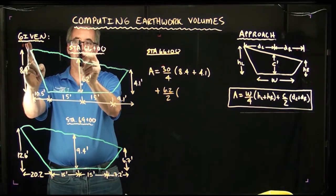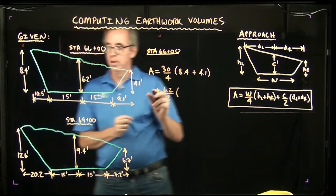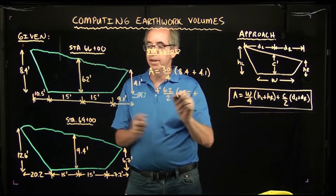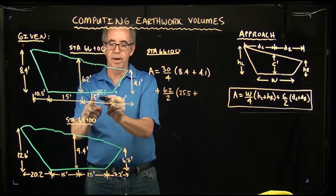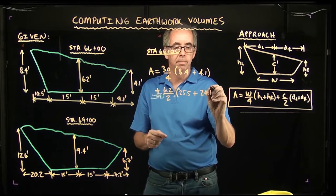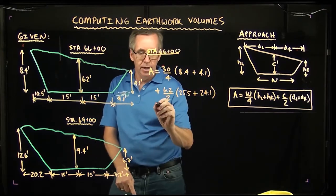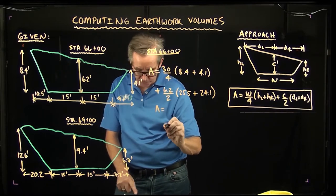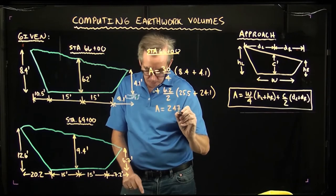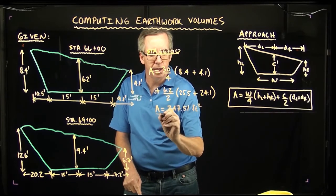this dimension up top here which would be the 15 plus the 10.5 which is 25.5 plus, and then we have the same thing on the right hand side where we have the 15 and the 9.1 which comes out to 24.1. So when we do this calculation, it comes out for at this section we have a cross sectional area of 247.51 square feet.